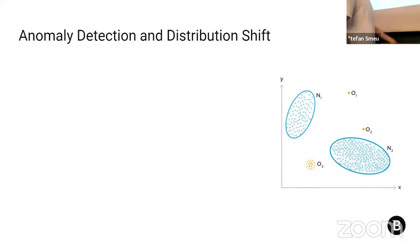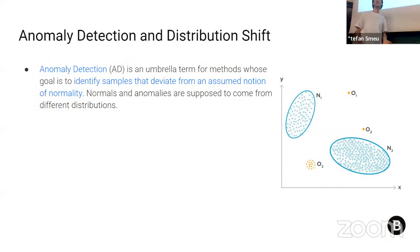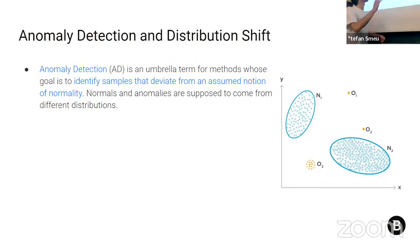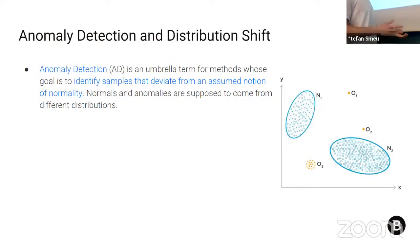Now for the second presentation. Anomaly detection is an umbrella term for methods whose goal is to identify samples that deviate from some assumption of normality, where normal and abnormal data fit different distributions. From the diagram, m1 and m2 represent two different distributions — one denoted as normal data and the other as abnormal — and we want to differentiate between them.